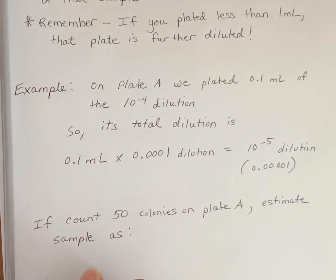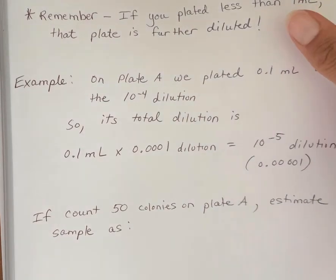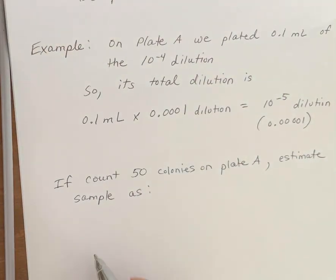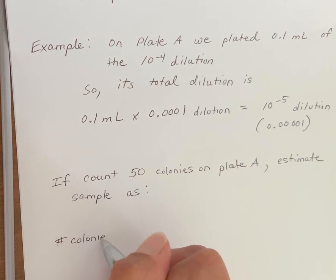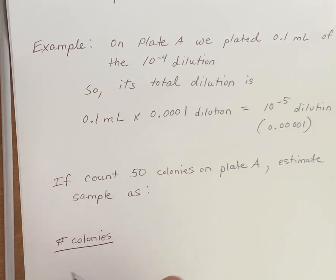You would do the number of colonies over the dilution that led to those colonies.